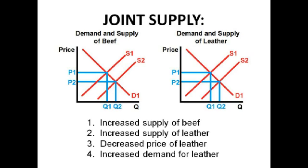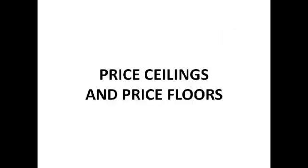This leads to increased demand for leather because when the price falls, people decide to purchase leather goods. So in joint supply, an increase in supply of one good leads to increased supply of the joint good, a fall in its price, and an increase in its demand.